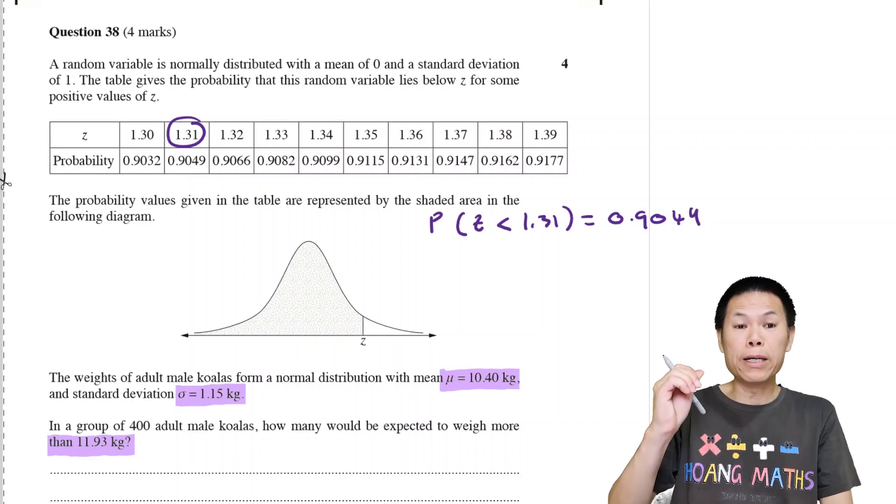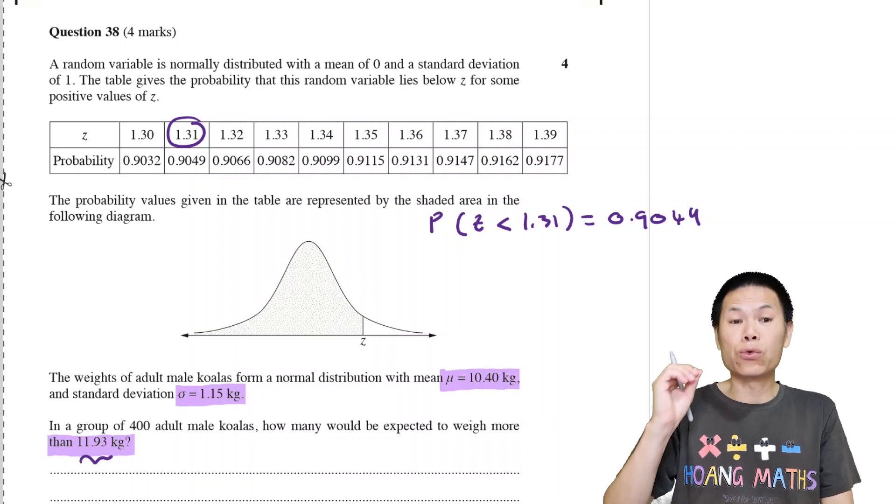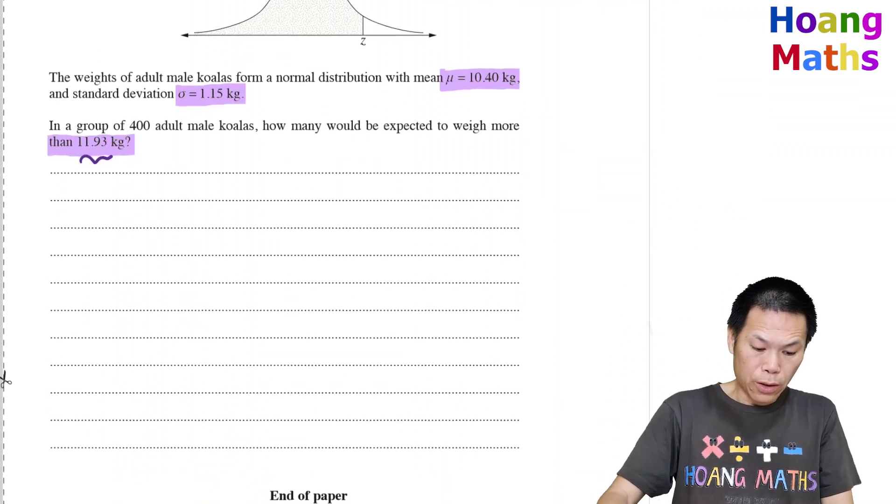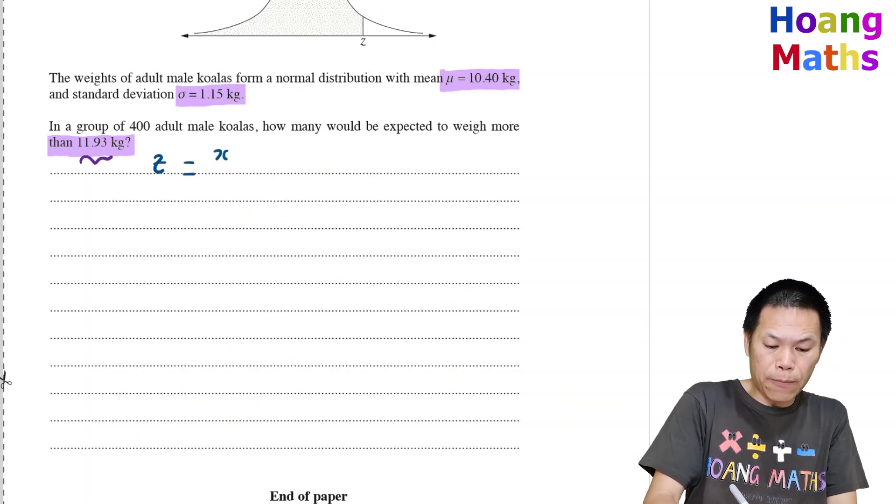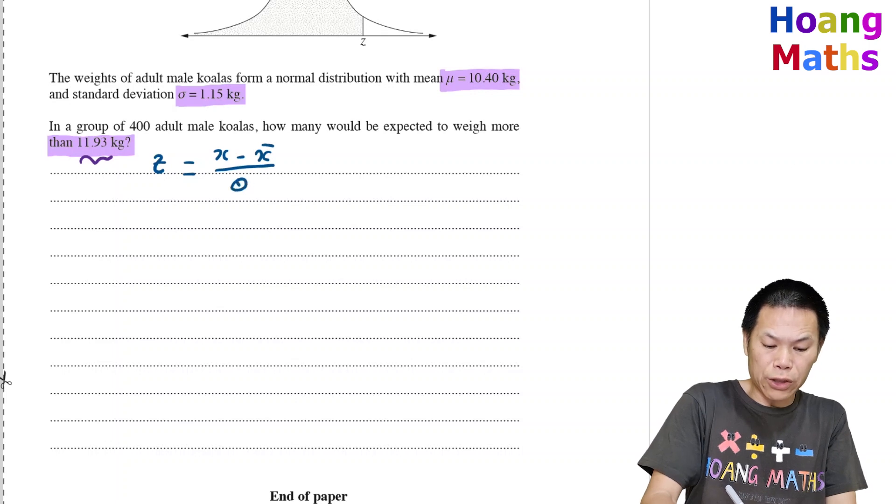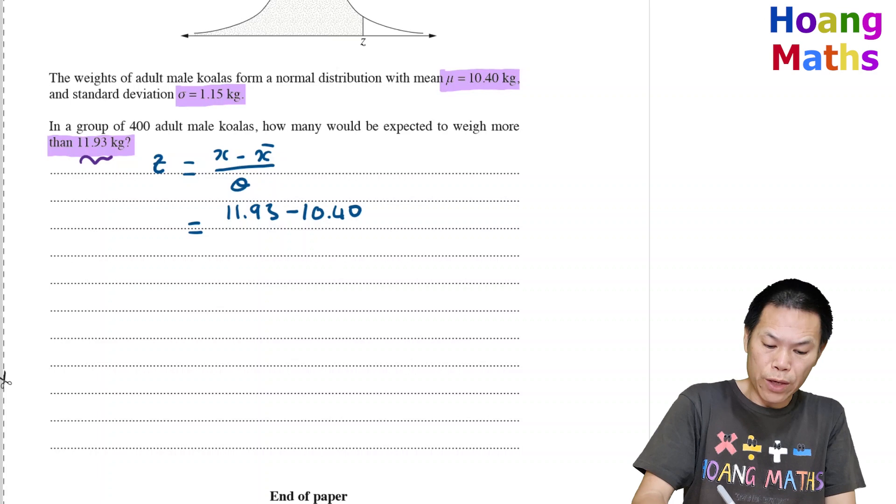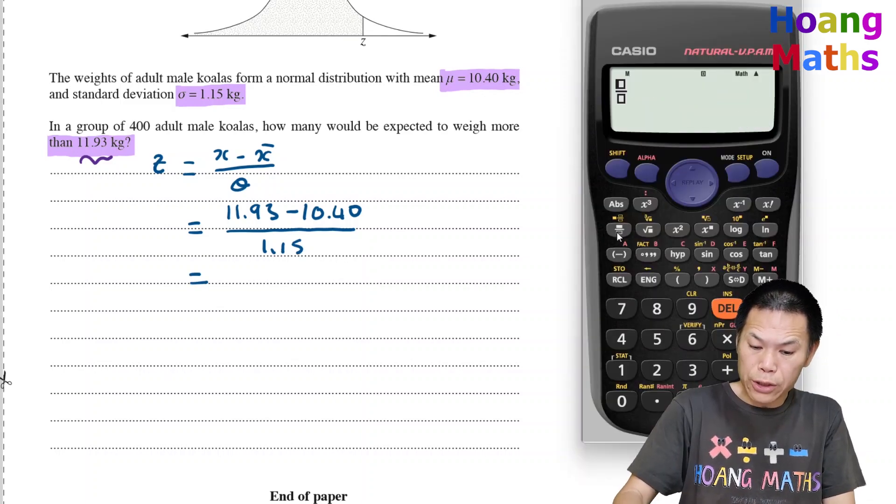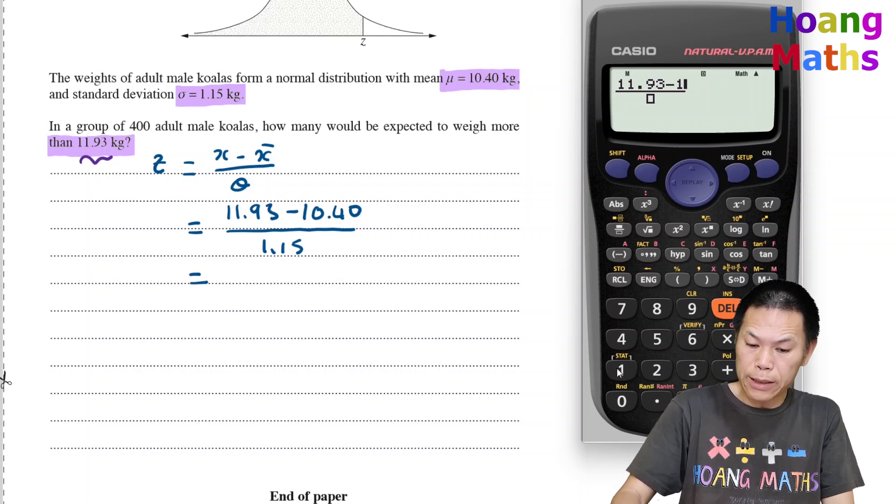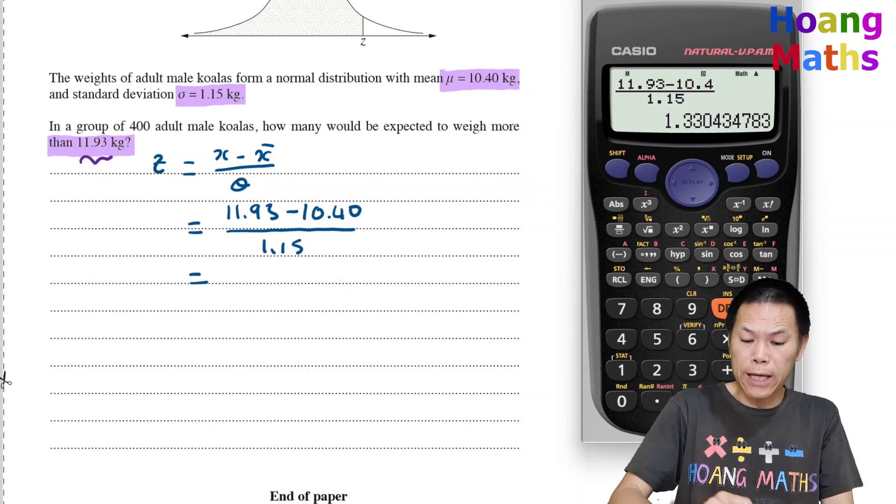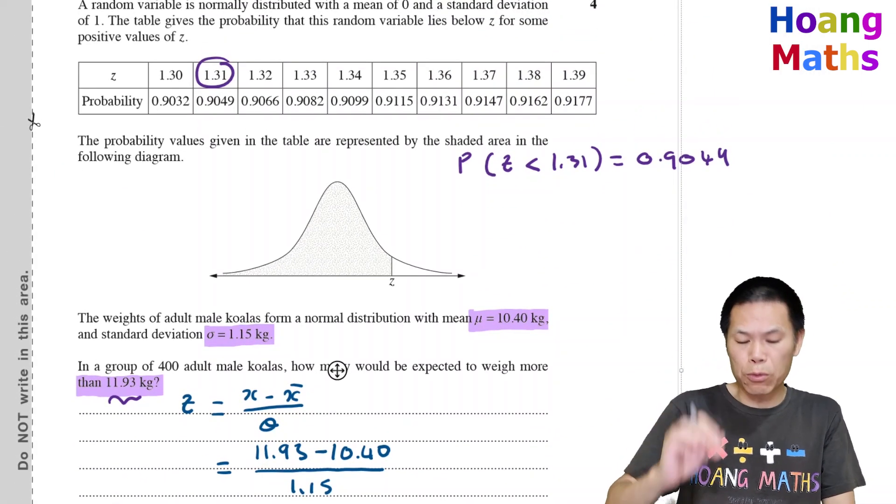We need to work out the probability greater than 11.93 kilograms. We need to convert this into Z score first. The Z score is X minus X bar over the standard deviation. The score is 11.93 minus the mean 10.40, divided by the standard deviation 1.15. That gives 11.93 minus 10.4 over 1.15, which is 1.33. Just correct to 2 decimal places, 1.33, because the table gives up to 2 decimal places.